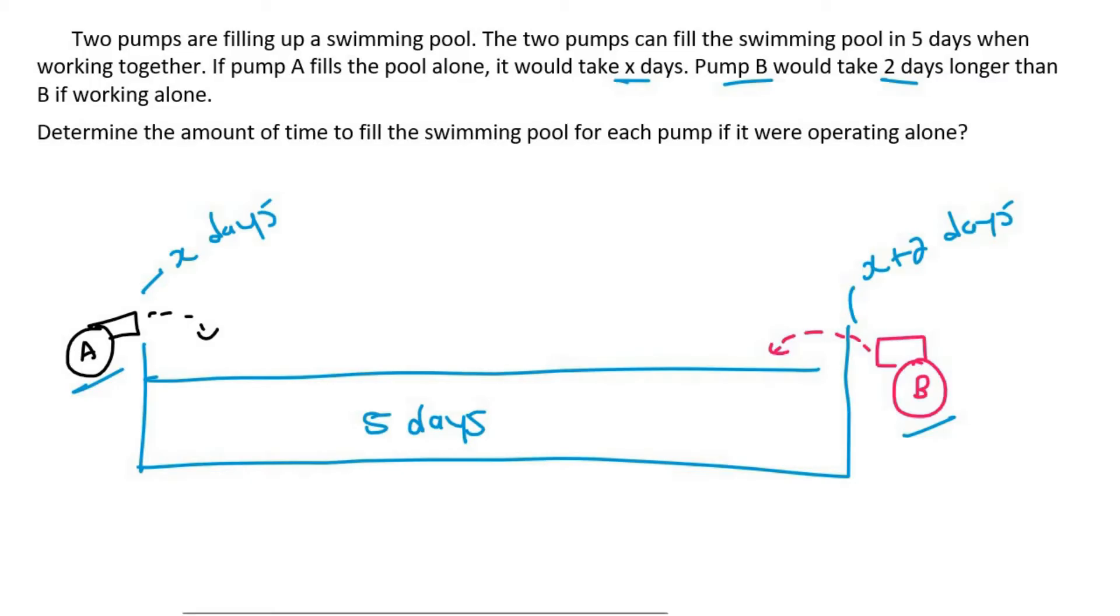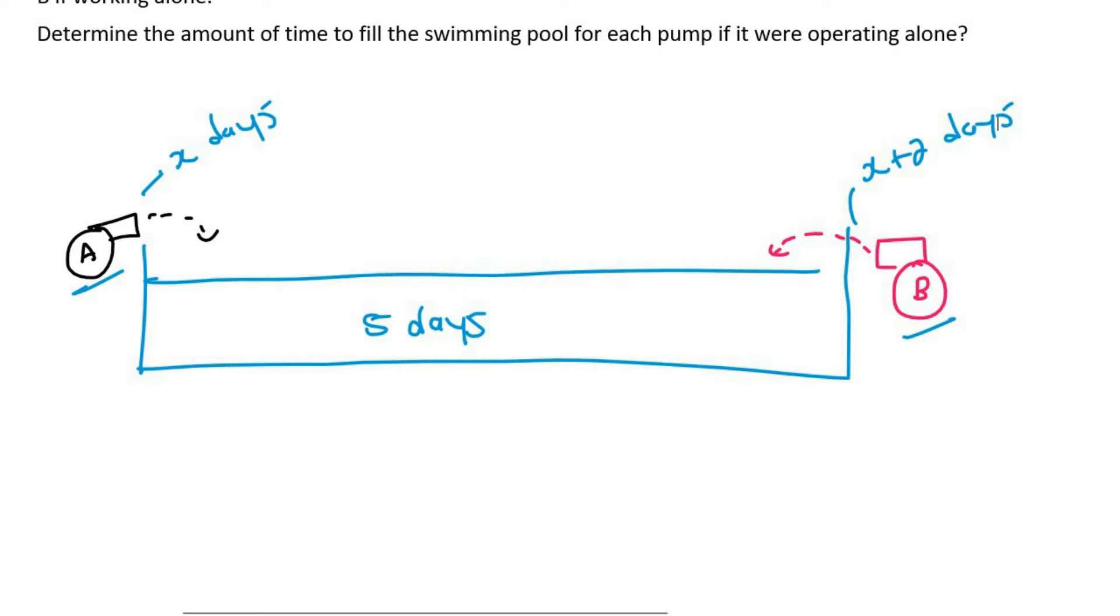Now, here's the secret with these types of questions. I want you to think about one day. When pump A and B work together, here's the key, guys. This is the part you really need to pay attention to. If pump A and B work together, they can fill up this pool in five days. So then what fraction of the pool could they fill up in one day? Well done if you said one-fifth of the pool.